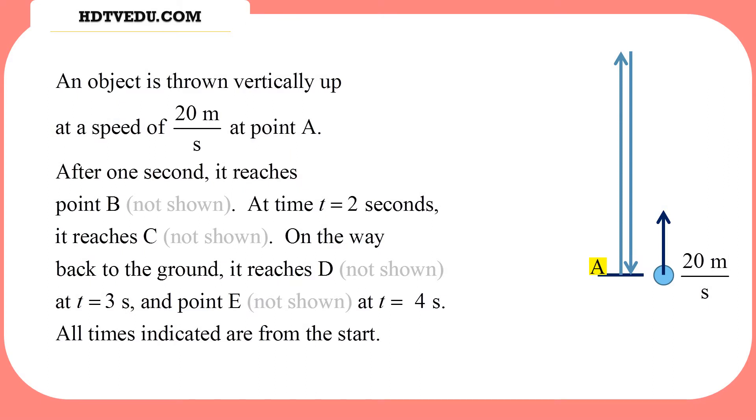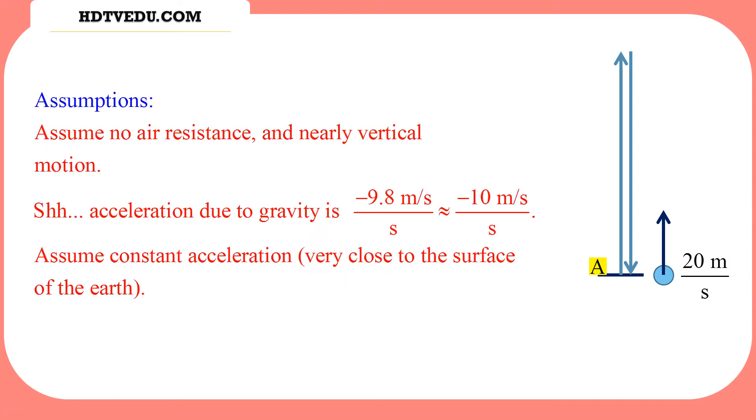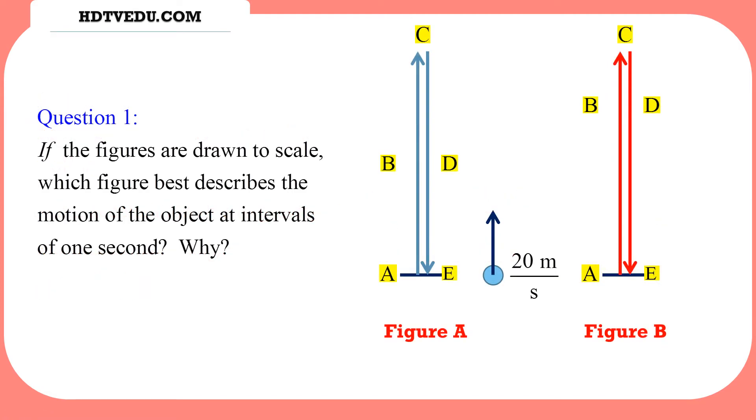In this collection of questions, an object is thrown vertically up at a speed of 20 meters per second at point A. Point A is shown right here. Question number one: if figure A and figure B are drawn to scale, which figure best describes the motion of the object at intervals of one second and why?